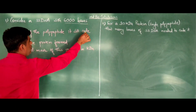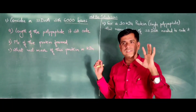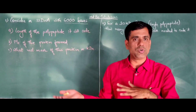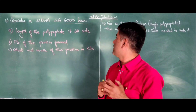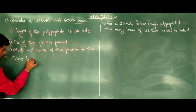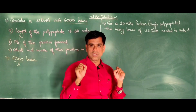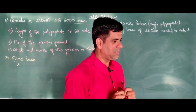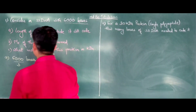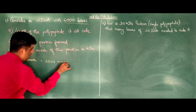So we have exactly 6000 bases. What would be the length of the polypeptide it will code for? From our earlier studies we know the genetic code is triplet — three bases on the DNA or RNA code for one amino acid. So the ratio is: 3 bases = 1 amino acid. Length of the polypeptide = 6000 bases divided by 3, which comes to 2000 amino acids. You also know some nonsense codons like UAG, UGA, and the third one.